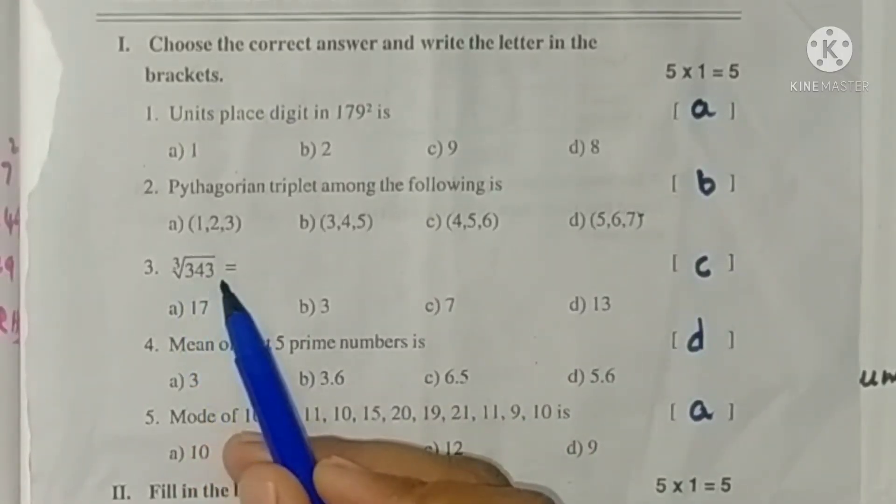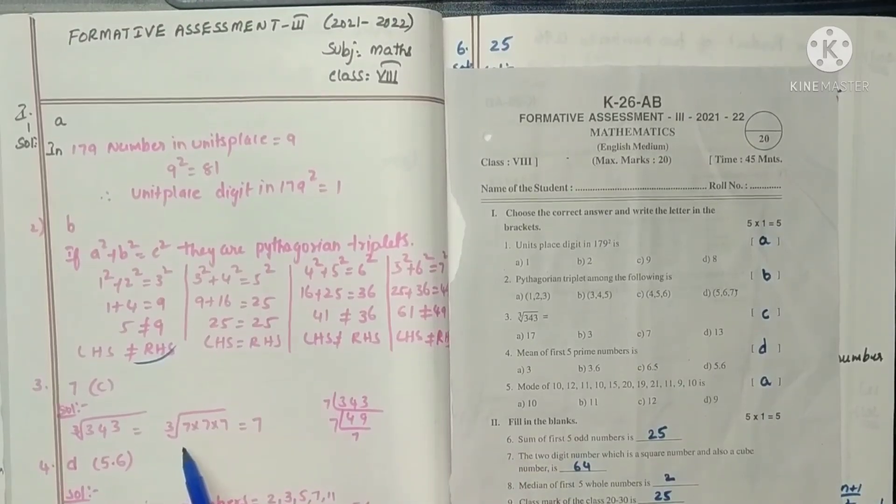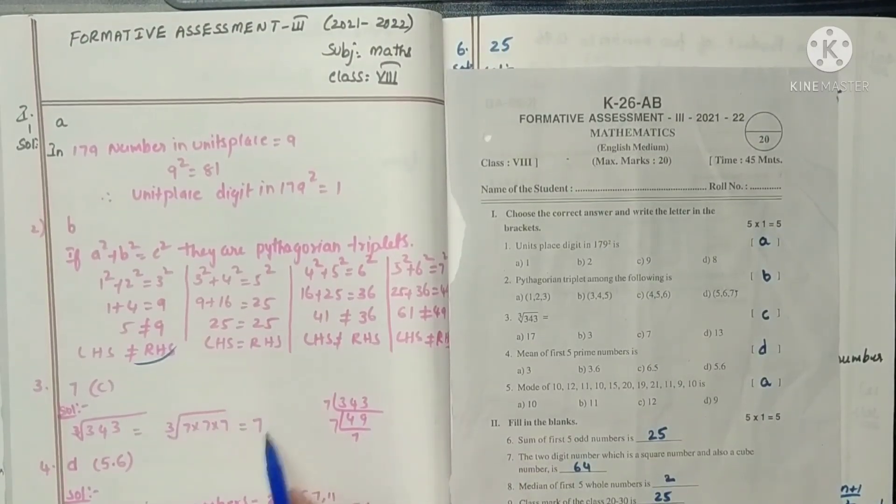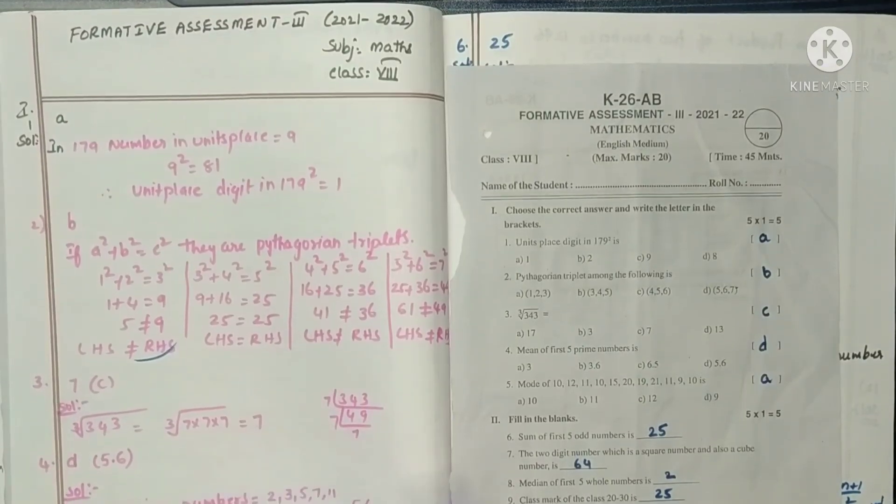Next, cube root of 343. Prime factorization gives 3 sevens. So cube root, you have to take one from each set. So this is 7, option C.